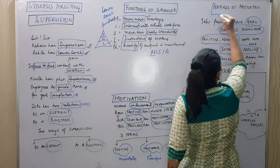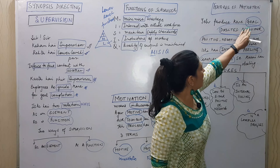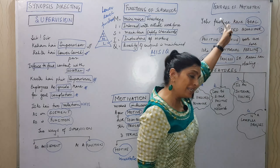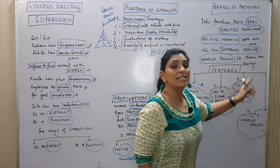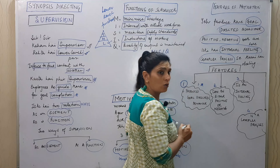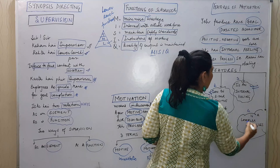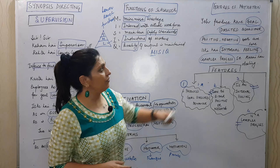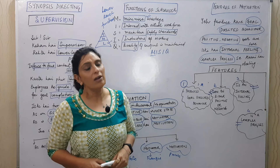The features of motivation: it produces goal-directed behavior, can be positive or negative, is an internal feeling, and is a complex process. So when features of motivation are asked — produces goal-directed behavior, can be positive or negative, is an internal feeling, and is a complex process. That's how you will learn when the three terms and features of motivation are asked.